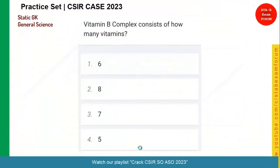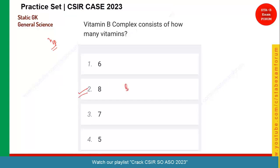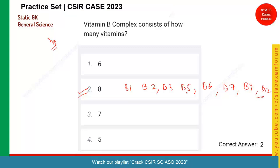Let us see the next question. Vitamin B complex consists of how many vitamins? Vitamin B complex consists of 8 vitamins: B1, B2, B3, B5, B6, B7, B9, and B12. All these vitamins are called vitamin B complex. So option two is the right answer.